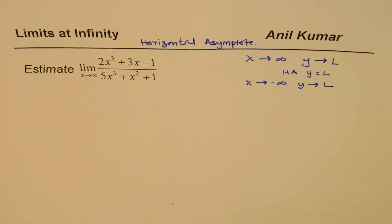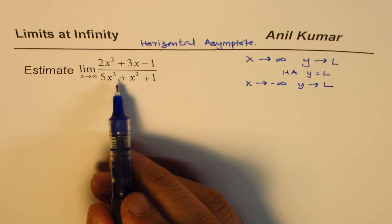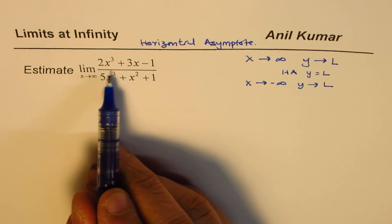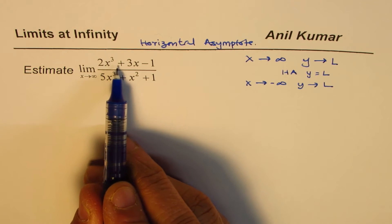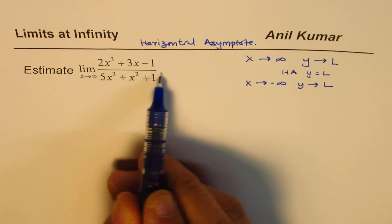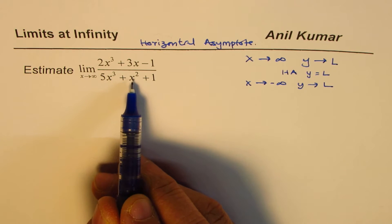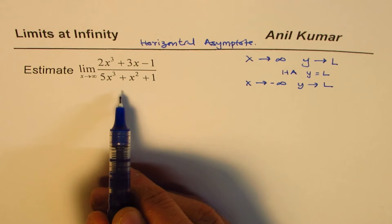Remember, we could have two horizontal asymptotes for a given function. That's what is important to understand. Let's look into this question. The question here is limit when x approaches positive infinity: (2x³ + 3x - 1) divided by (5x³ + x² + 1).